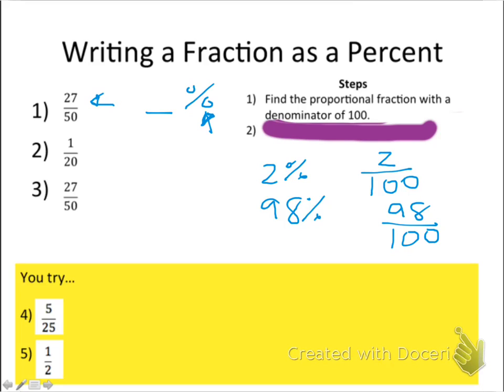To write a fraction as a percent, we need to get the fraction out of 100. We're trying to write this out of 100, so what you're always going to do first is figure out how to get from this denominator to 100.